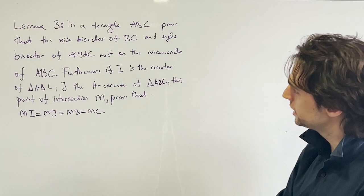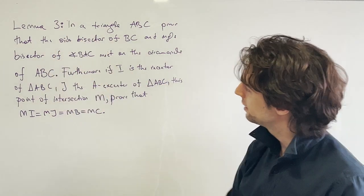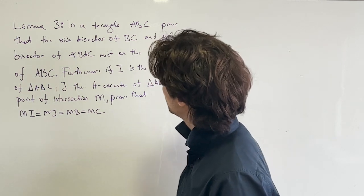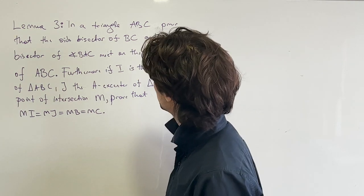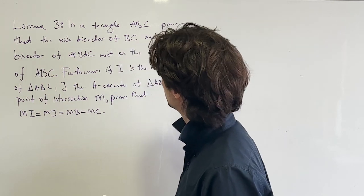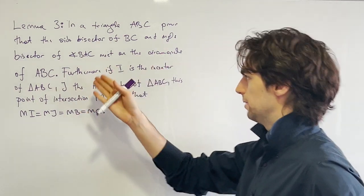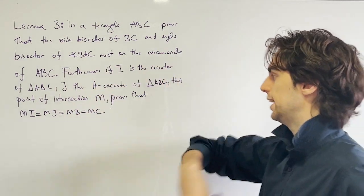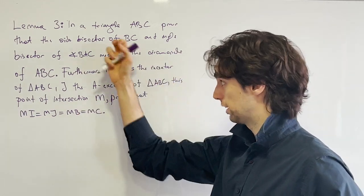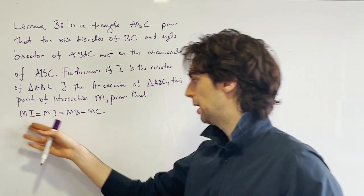So in the triangle ABC we need to prove that the intersection of the side bisector of BC and the angle bisector of BAC meet on the circumcircle. So we have the triangle ABC, and furthermore we have I, the incenter, and J, the A-excenter of ABC. Let's prove that if this intersection is M, that MB equals MC equals MI equals MJ.